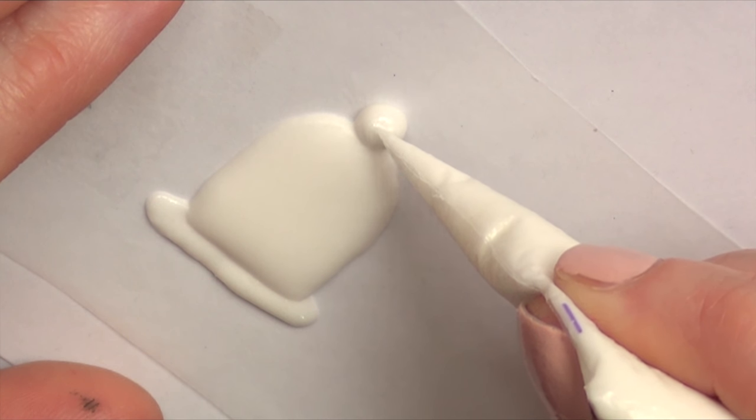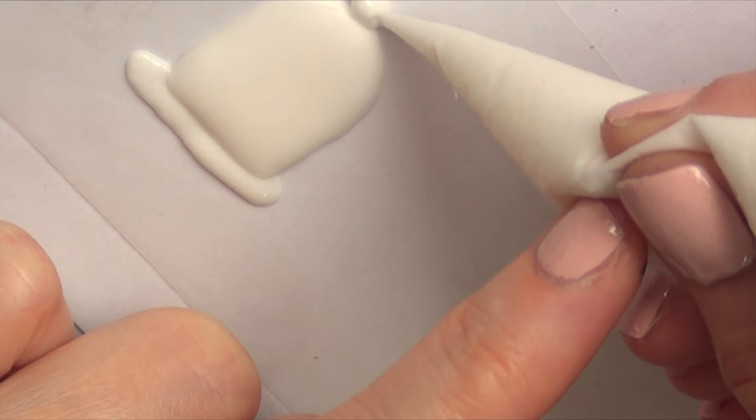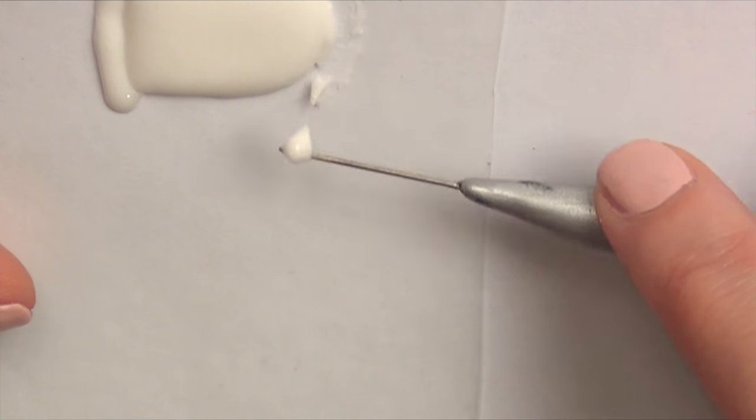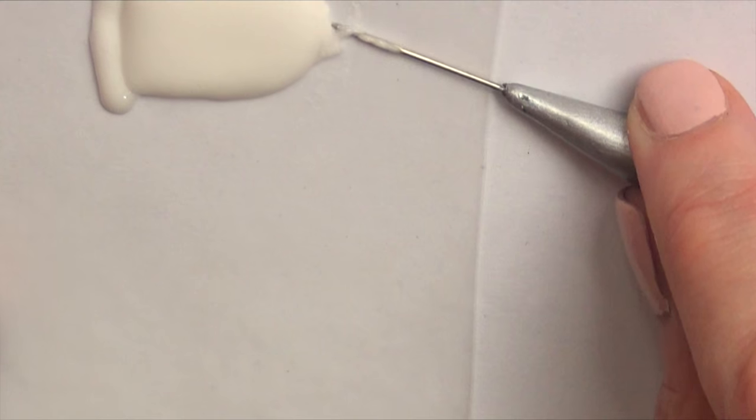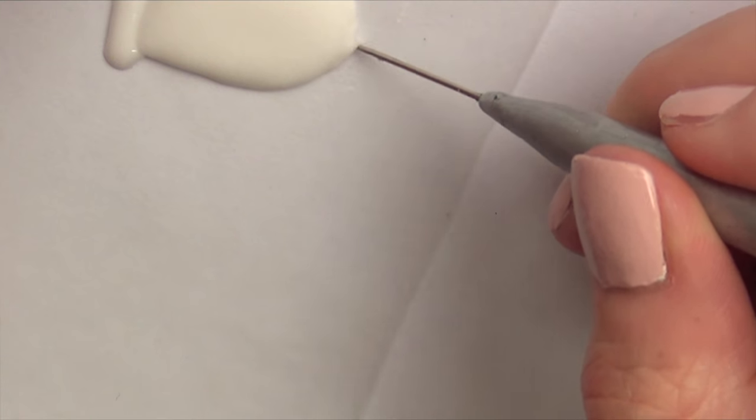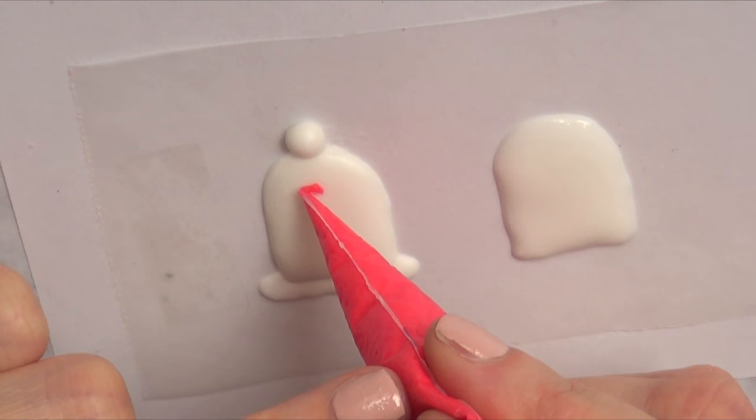If you're making any mistakes, it's pretty easy to remove. You just have to remove the part that you don't want anymore with your scrap tool or you can use a toothpick as well. But it has to be just before your icing dries because it's soft and manageable.